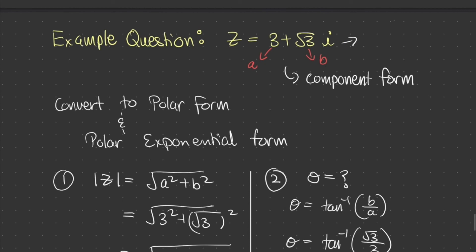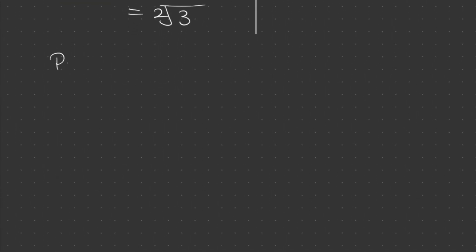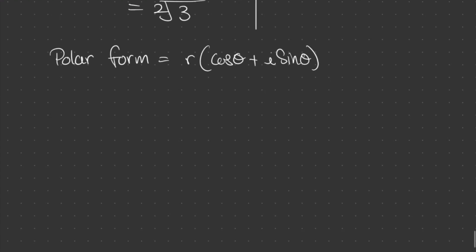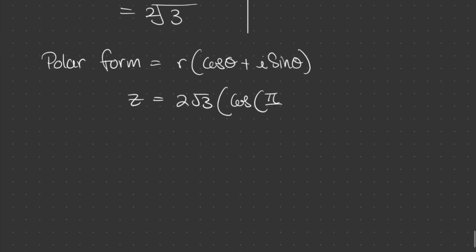Now, if we draw out z, we see that it's in the first quadrant. Therefore, we can leave theta as positive. Now, let's convert this into the polar form. Which, remember, can be represented as r bracket cos theta plus i sine theta bracket. Now, we can write this as z is equal to 2 square root 3 bracket cos pi over 6 plus i sine pi over 6 bracket.